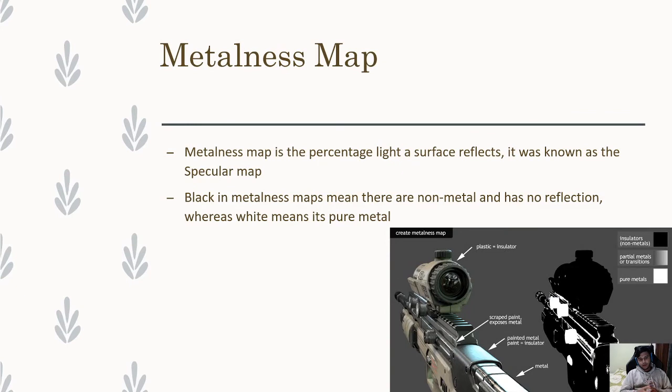After that we have the metalness map. Metalness map is the percentage light a surface reflects. It was known as the specular map. Black in metalness maps means there are non-metal and has no reflection, whereas white means it's pure metal. If we look at this image of a gun right here you can see the places that are metal. This part in particular, this ridge is metal. You can see if there's sun, there's light hitting this part therefore there's a reflection. Whereas this part here even though the sun is coming from this direction the plastic isn't getting reflected at all because obviously plastic isn't a metal.